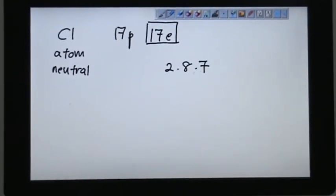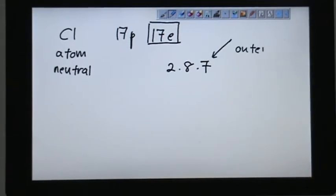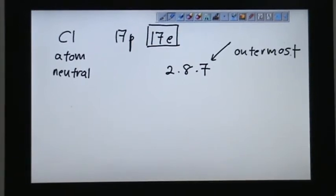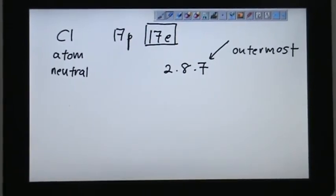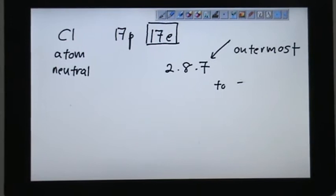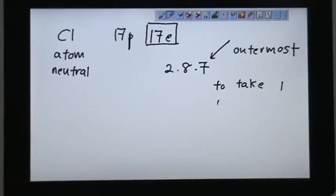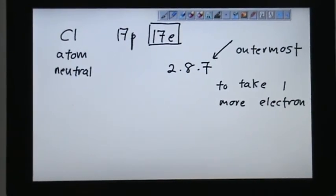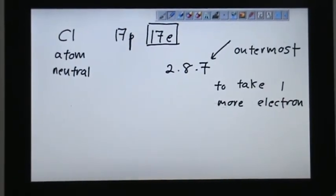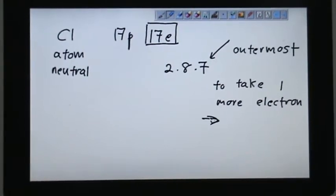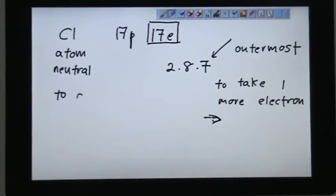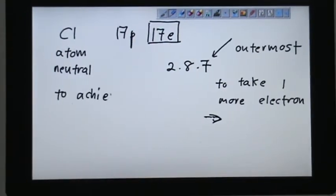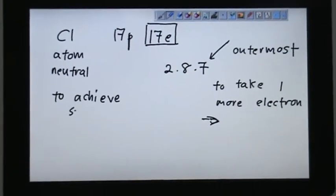When we consider 2-8-7, we have this outermost electron. This outermost electron, it is much easier to take one more electron to achieve the number eight to be stable. To take one more electron to achieve the stable condition, the stable eight electron condition.